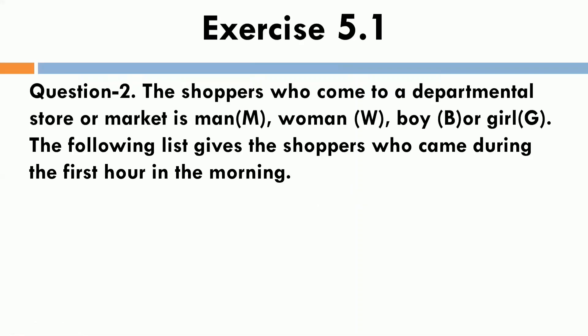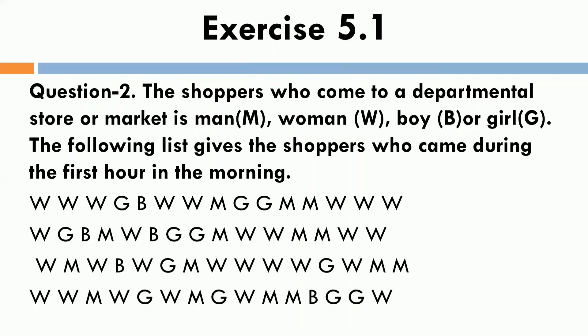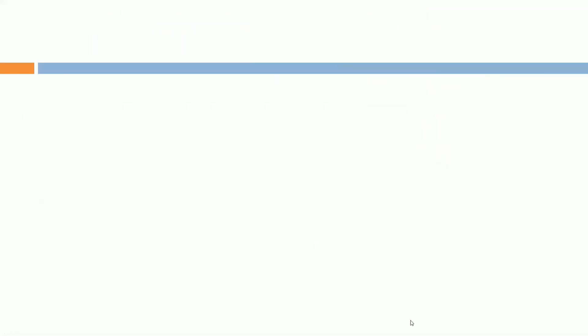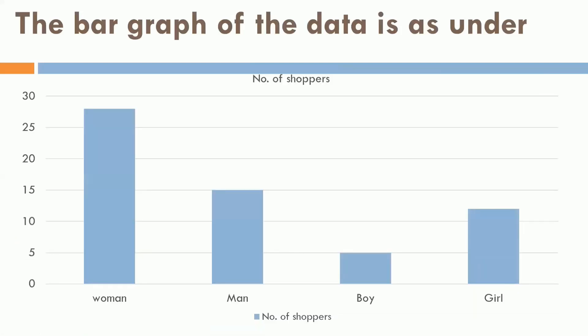Next is, question number 2, where you are given some data for number of women, men, boys and girls visiting a departmental store. Right? So, for this data, first we will have to prepare a frequency distribution table which will be like this. So, in first column, there will be shoppers, second will be for tally marks and third will be for frequency. So, for women, if we will put the tally marks and count, it will be 28. For men, it is 15. For boys, it is 5. And for girls, it is 12. Now, if we will put the bar graph for this data, then the bar will be having maximum height for women and the bar which is the smallest one or the shortest one will be representing number of boys.